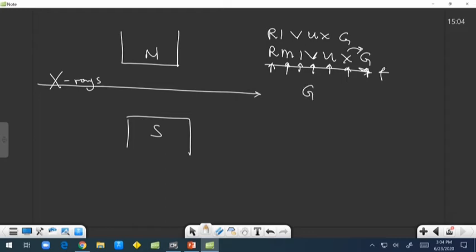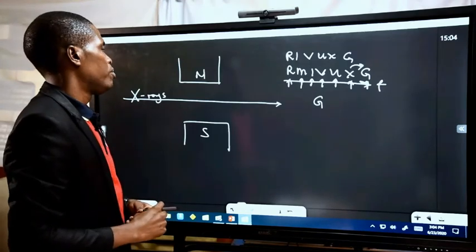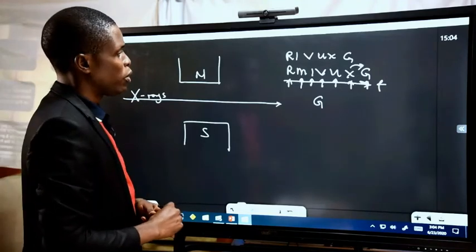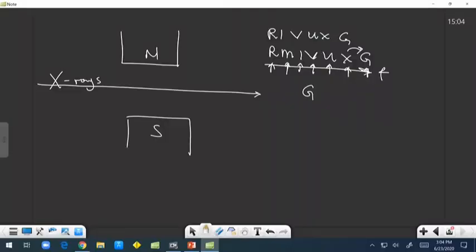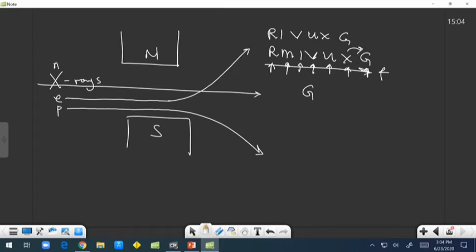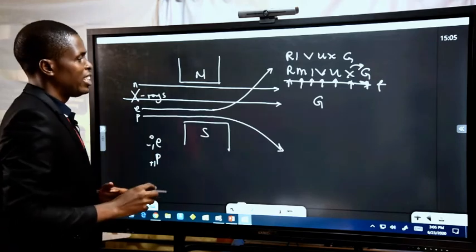Gamma rays have the highest penetrating power and cannot be stopped by any objects except by a very thick lead solid. X-rays are cancerous in excess, but are also used for treating cancer because they can penetrate the bones. Gamma rays are used for the same purpose. Electrons, when they reach a magnetic field, are deflected toward the north pole. Protons are deflected toward the south pole. Neutrons travel in a straight line just like X-rays — they are neutral, having no charge — while electrons have negative charges and protons have positive charges, so they are deflected in electric and magnetic fields.